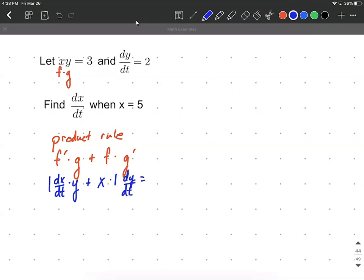On the right-hand side, the derivative of 3, a constant, is going to be 0. So we can fill in the information that we do know right now. We're given that dy/dt is going to be 2.